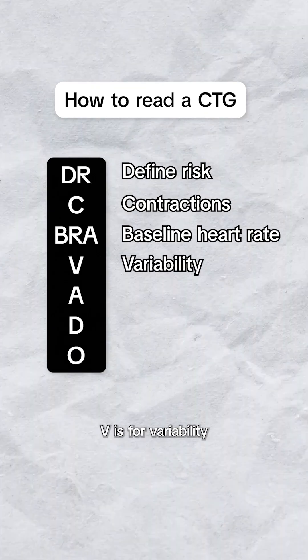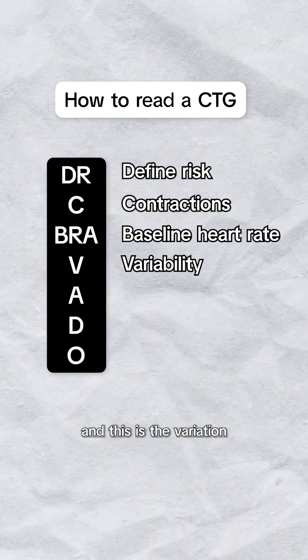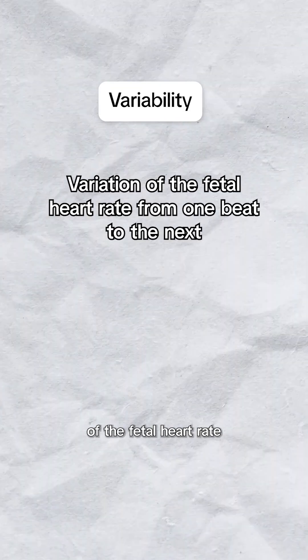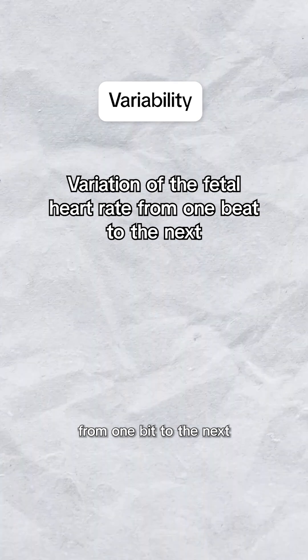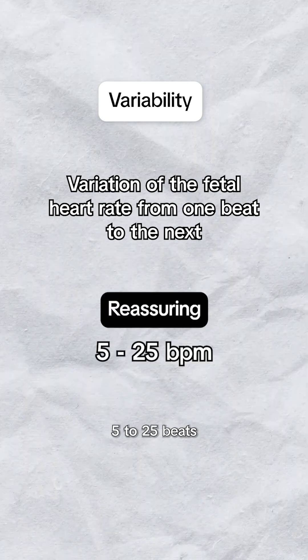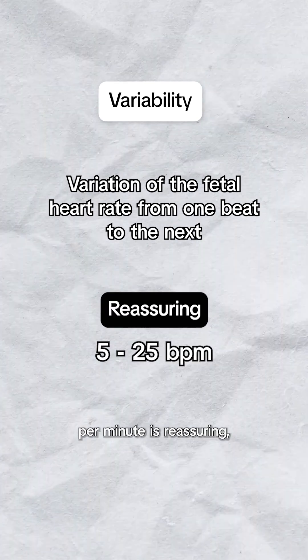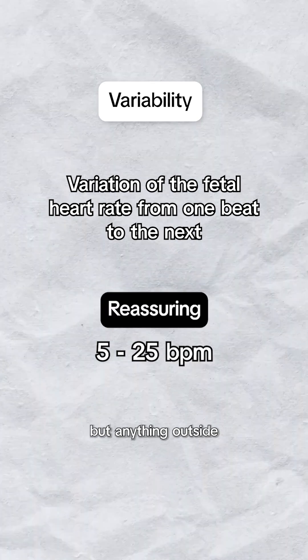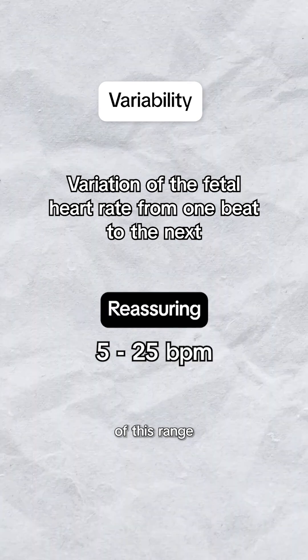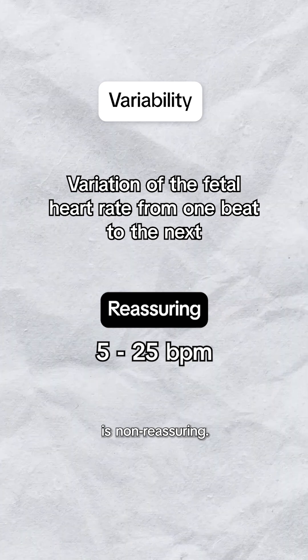V is for variability, and this is the variation of the fetal heart rate from one beat to the next. Five to 25 beats per minute is reassuring, but anything outside of this range is non-reassuring.